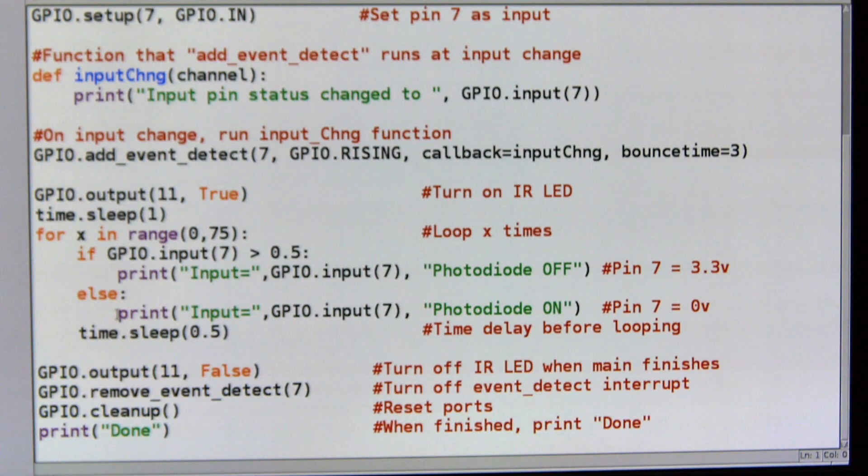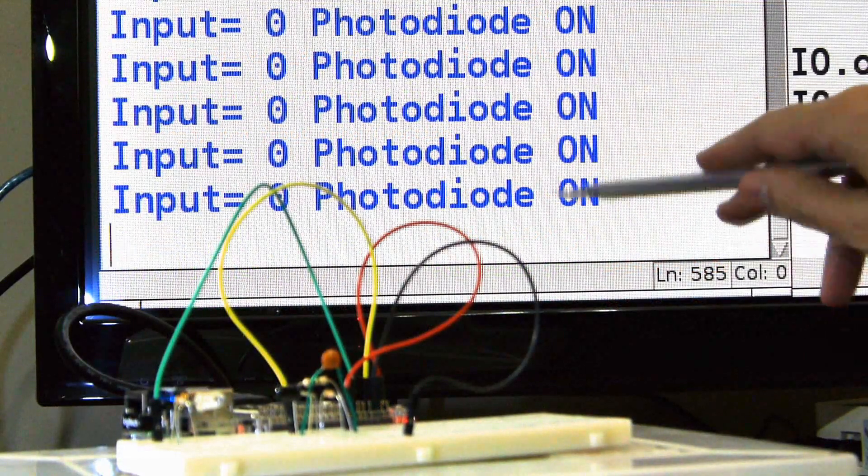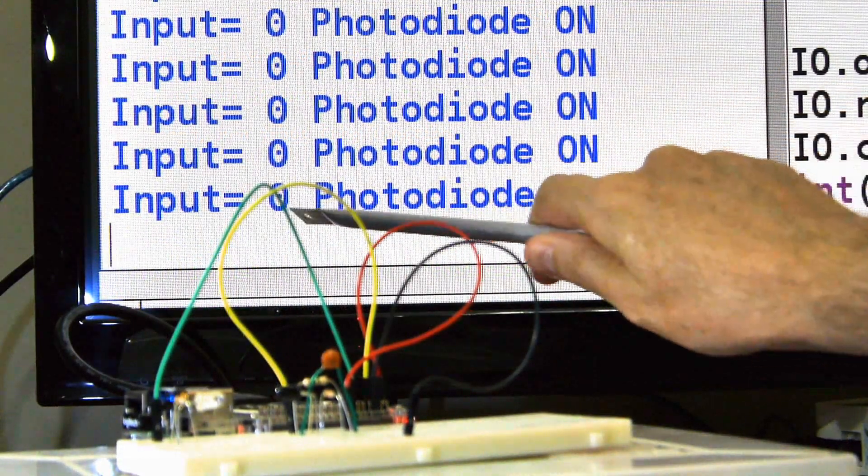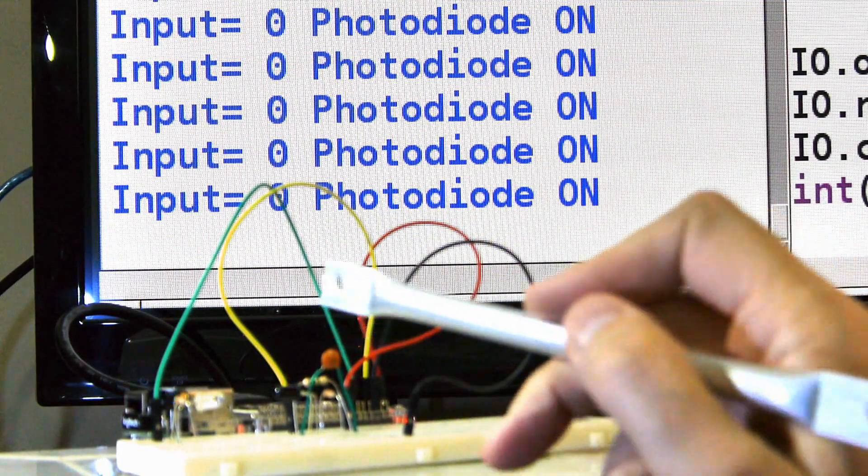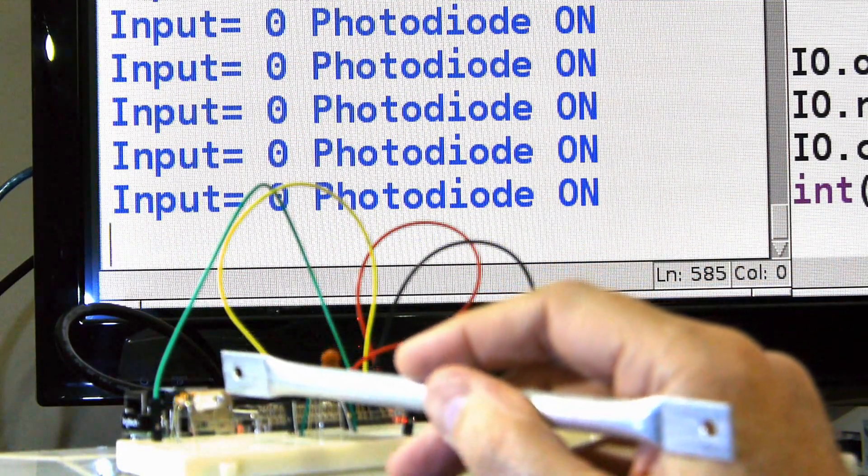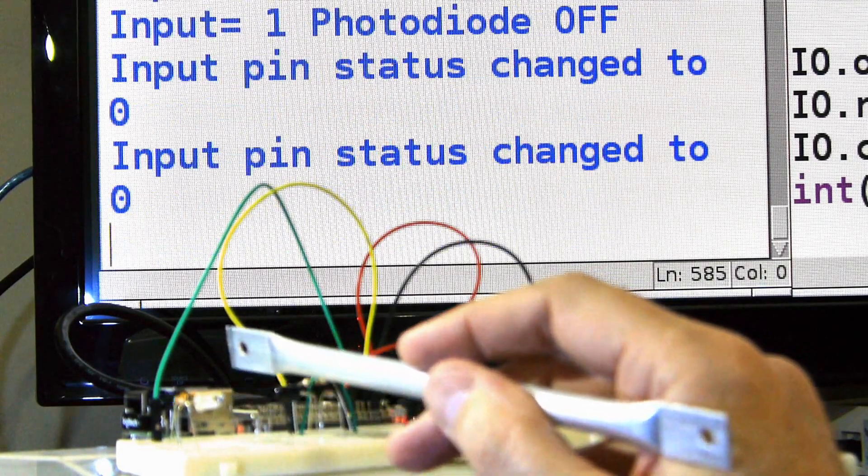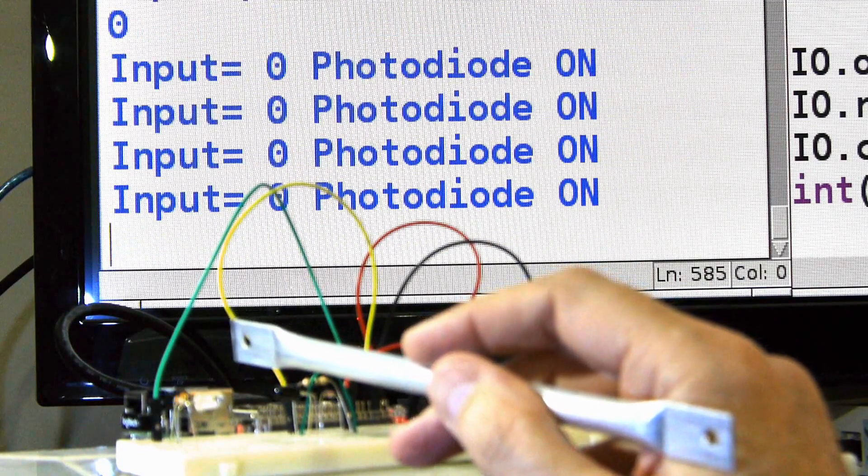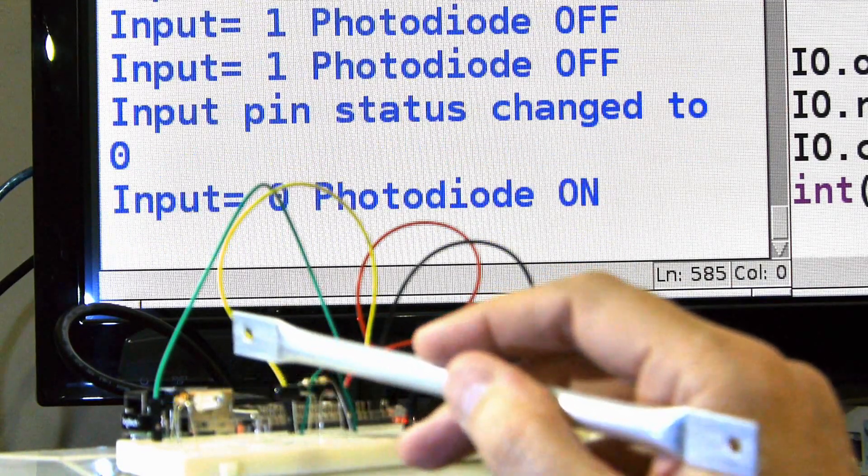Okay, well, let's see it work a little bit. Here you can see the program running in the background. It's telling me what the input is, whether the photodiode is on or off. And when I break the beam here, it will change to input 1, photodiode off. And on and off and on.